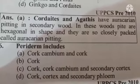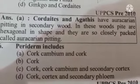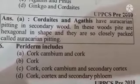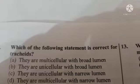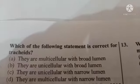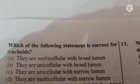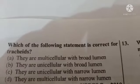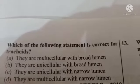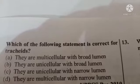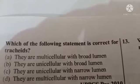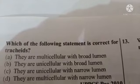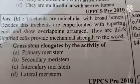The answer is option C, cork cambium and secondary cortex. Next question: which of the following statements is correct for tracheids? Option A they are multicellular with broad lumen, option B they are unicellular with broad lumen, option C they are unicellular with narrow lumen, option D they are multicellular with narrow lumen. The answer is option B, they are unicellular with broad lumen.